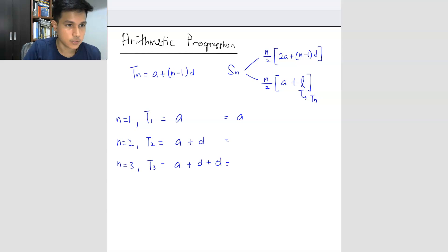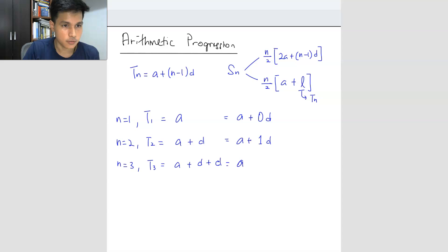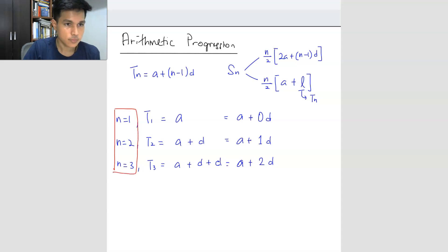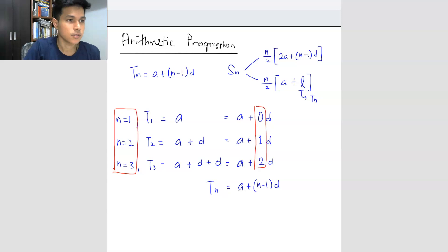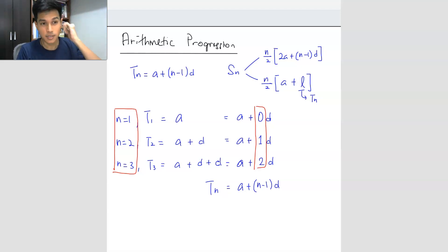There's a pattern here. When N equals 1, you get A plus 0D. When N equals 2, you get A plus 1D. When N equals 3, you get A plus 2D. We are trying to see the relationship between the N value and the coefficient of D — it's always N minus 1. Because of that, we can form our equation: TN equals A plus (N minus 1)D. So this is the formula. There's really nothing much to derive for TN; I just put it here in case a question asks, so at least you can show it.